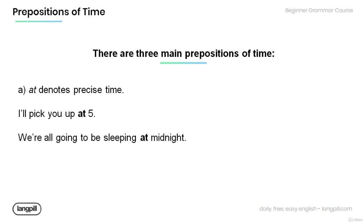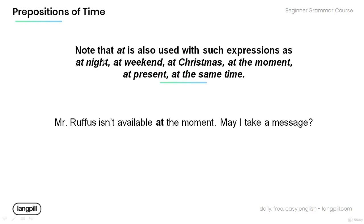There are three main prepositions of time. A: 'At.' 'At' denotes precise time. For example: I'll pick you up at five. The preposition 'at' denotes a precise time, five. And in the sentence: We're all going to be sleeping at midnight. Again, 'at' denotes a precise time, which is midnight. Note that 'at' is also used with such expressions as 'at night,' 'at the weekend,' 'at Christmas,' 'at the moment,' 'at present,' and 'at the same time.'